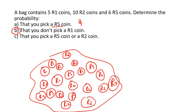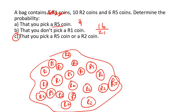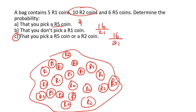What is the probability that you don't pick a one-rand coin? Out of 21 coins total, just ignore the one-rand coins — you could pick any of the 10 two-rand coins or the 6 five-rand coins, so that's 16 out of 21, which cannot be simplified. Then the question asks for the probability that you pick a five-rand or a two-rand: 6 five-rand coins plus 10 two-rand coins gives 16 options out of 21.